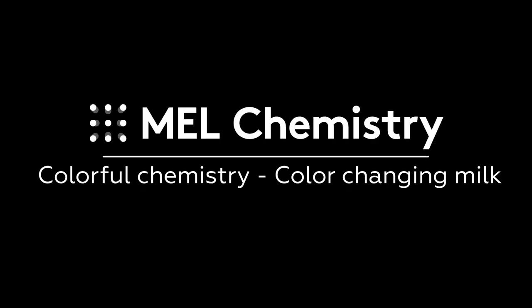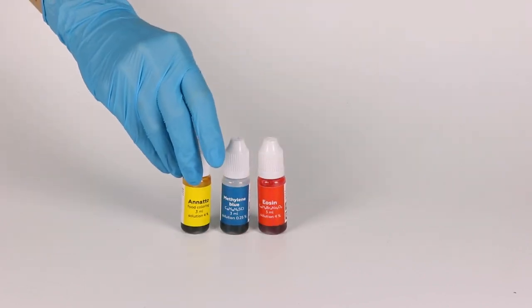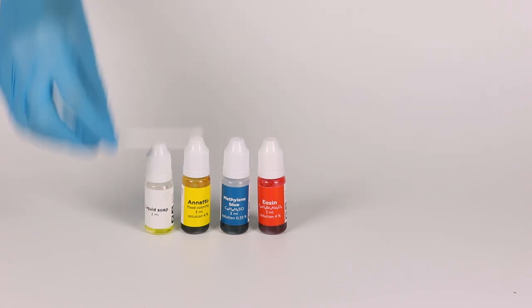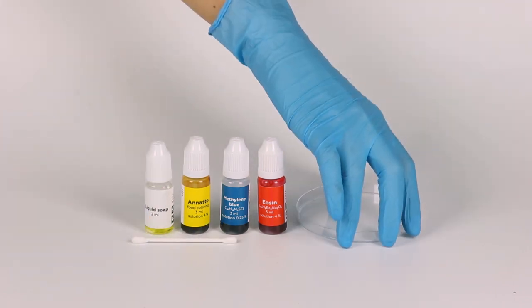For the color changing milk experiment, you will need the solutions of the colorings eosin, methylene blue and annatto, liquid soap, a cotton swab, a petri dish and some milk.